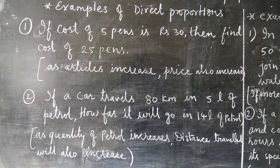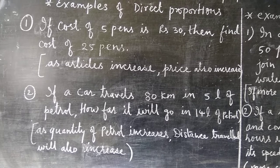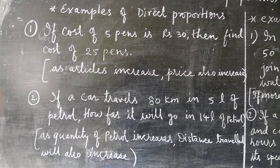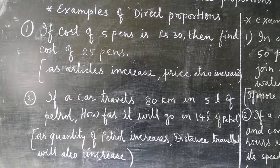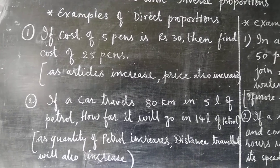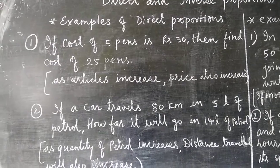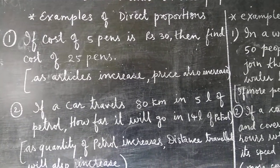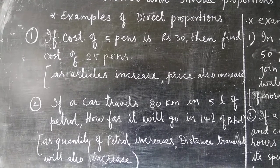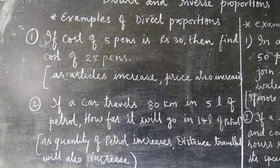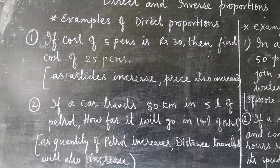In these two examples we can see that if one quantity is increasing, the other is also increasing, and if one quantity is decreasing, the other is also decreasing. So in such cases we can say that both quantities are directly proportional.